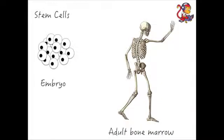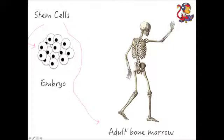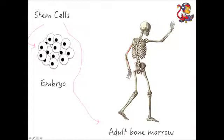There is a second place where you can get stem cells from. As well as embryos, you can also get stem cells from bone marrow. So there are two sources: either embryos or bone marrow. Bone marrow can be taken from adults — inside your bone, right in the middle, there are cells which are stem cells. A lot of your red blood cells are made from stem cells in the bone marrow.